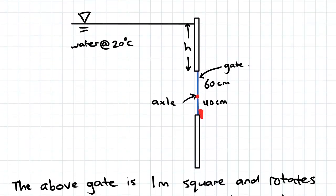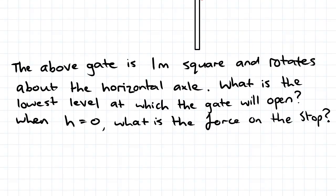So we've got a tank here with a gate embedded into the sidewall. The fluid is water at 20 degrees Celsius. The gate spins about an axle and there is a stop which prevents the gate from rotating anti-clockwise. We've got a fluid surface which is H above the top of the gate. The gate is 1 meter square and we've been asked to find at what level the gate will open and when H is 0 what the force on the stop is.